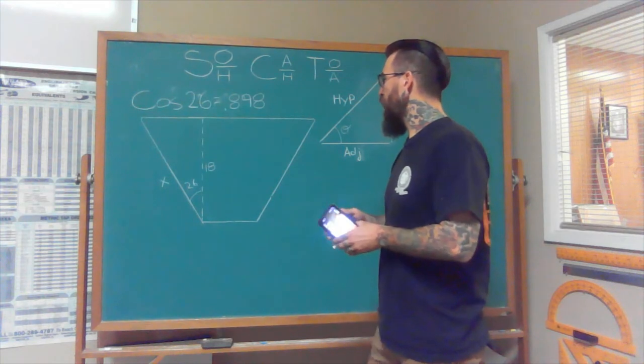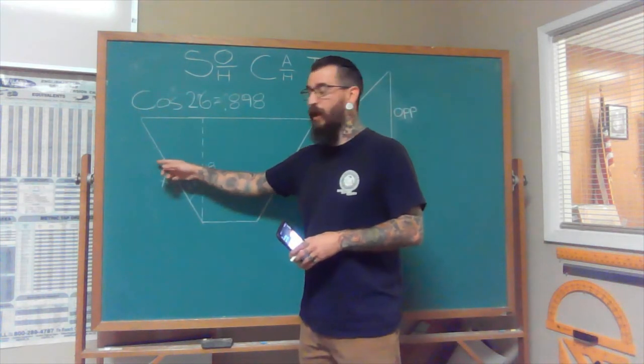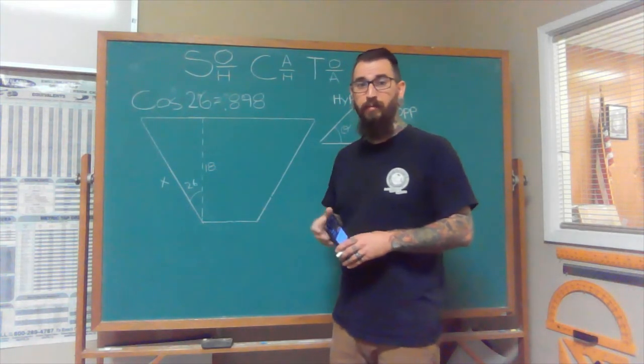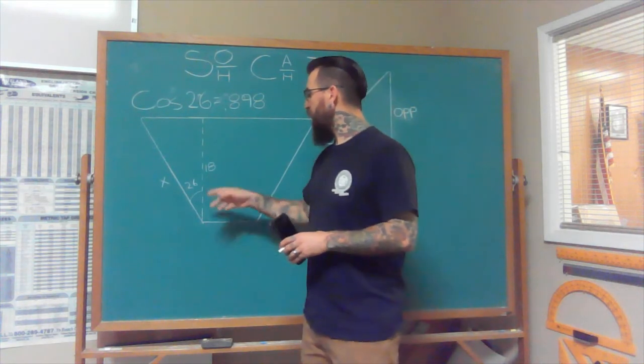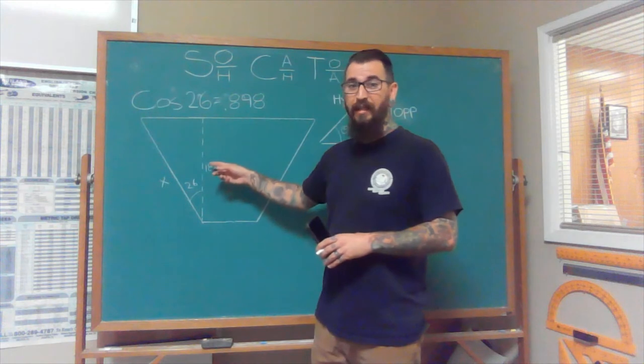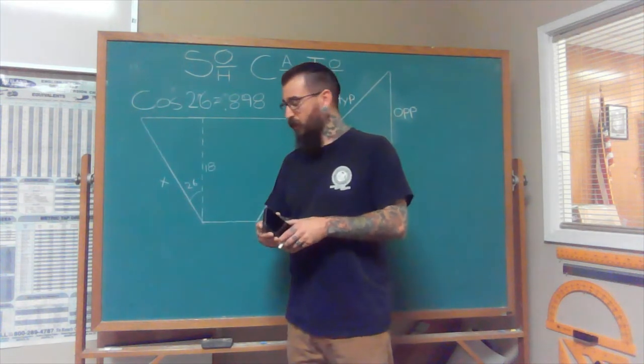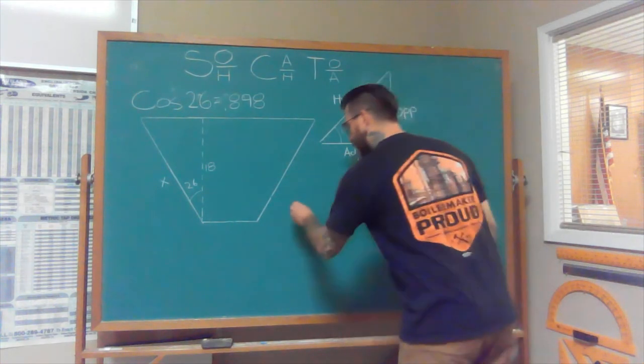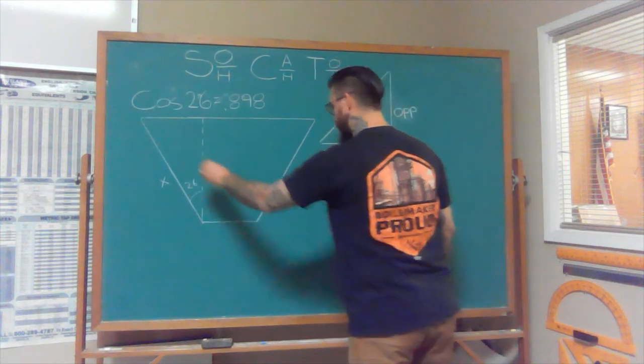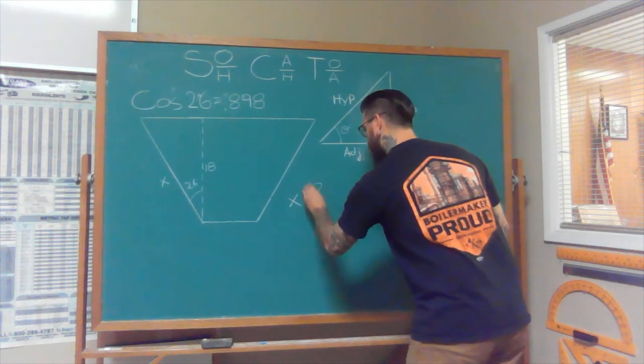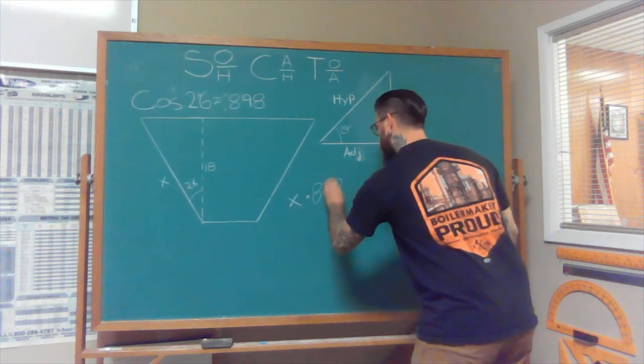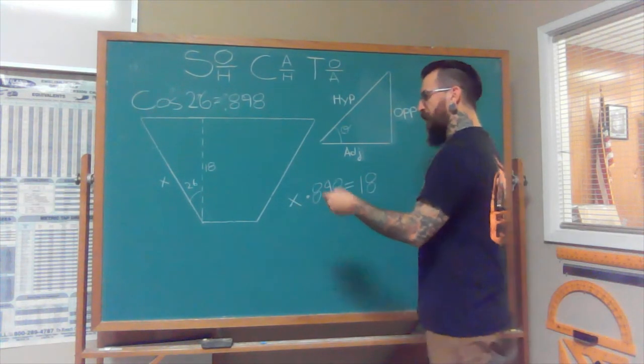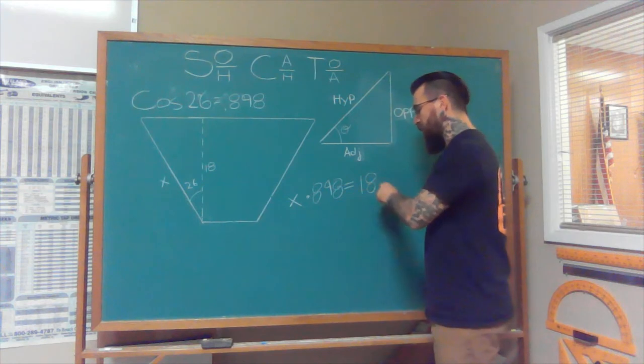Essentially, what we're saying is, this length right here, if we multiplied it by 0.898 or 89%, it would give us this number. And that's a really important way to try to think about all of this. What we're saying is, the adjacent leg right here is going to be 89% of the hypotenuse. So we could turn it into an algebra question. So really what we're saying is, x, which would be the hypotenuse right here, times 0.898 is going to equal 18. So we need to find out what times 0.898 is going to equal 18.